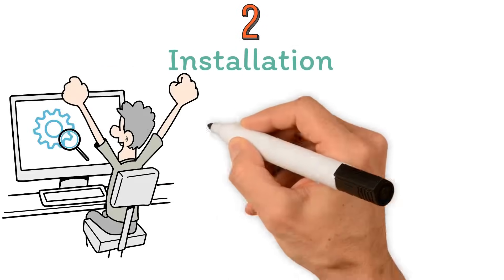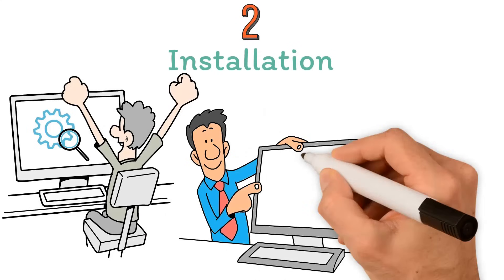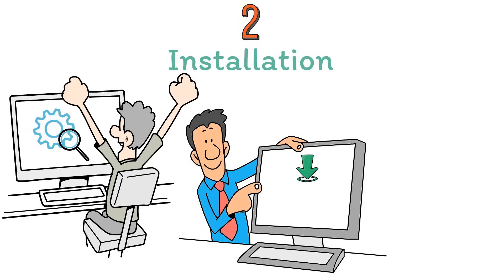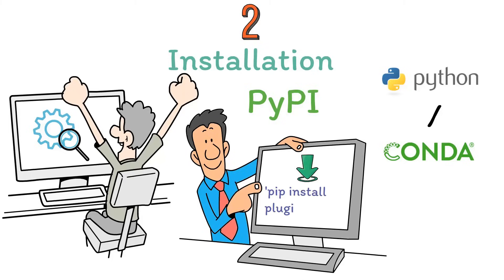Step 2: Installation. After identifying the plugin, the next step is installation. This usually involves using a package manager like PIP or Conda. For instance, if the plugin is hosted on PyPI, it can be installed using the command pip install plugin name.